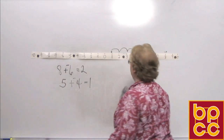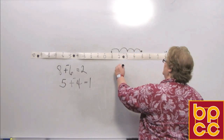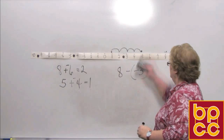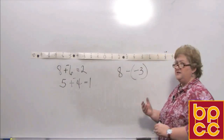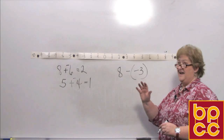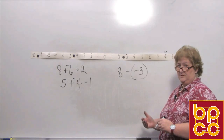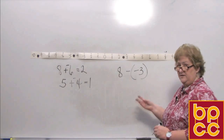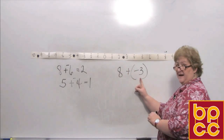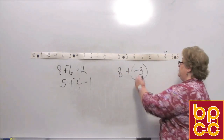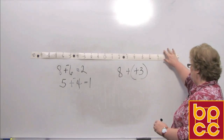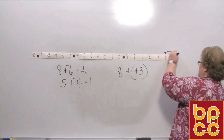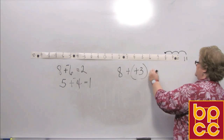Let's try another: 8 minus a negative 3. When I see a subtraction sign, I want to get you in the habit of adding the opposite. So this says 8 subtract a negative 3, which really means 8 plus the opposite of negative 3 — and the additive inverse of negative 3 is positive 3. So I'm going to go to 8 on the number line and add 3 in the positive direction: 1, 2, 3. And I'm at 11.